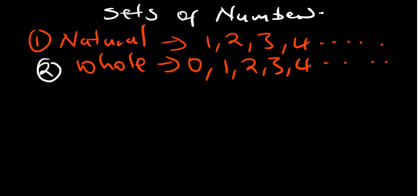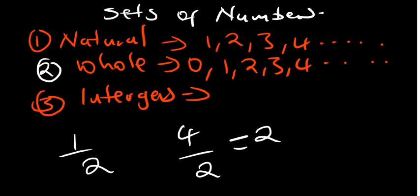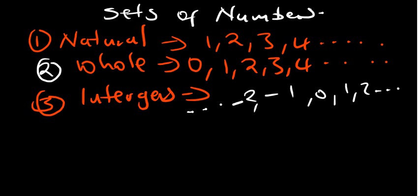A third set is integers. Integers also do not include decimal numbers or fractions — unless the fraction reduces to a whole number. For example, four over two equals two, which is a whole number, but one over two is not a natural number, not a whole number, and not an integer. The set of integers includes all whole numbers but also includes the negative numbers: negative 1 going down, and 1, 2 going up.